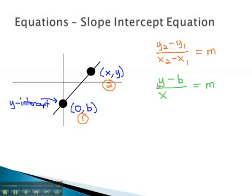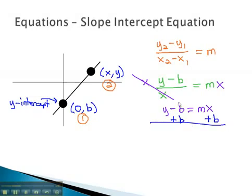What we will do with this equation is we will solve it to get the variable y all alone. We do this by first multiplying by x to clear the fraction. y minus b equals mx. Finally, to get the y alone, we will add b to both sides. y is equal to mx plus b.